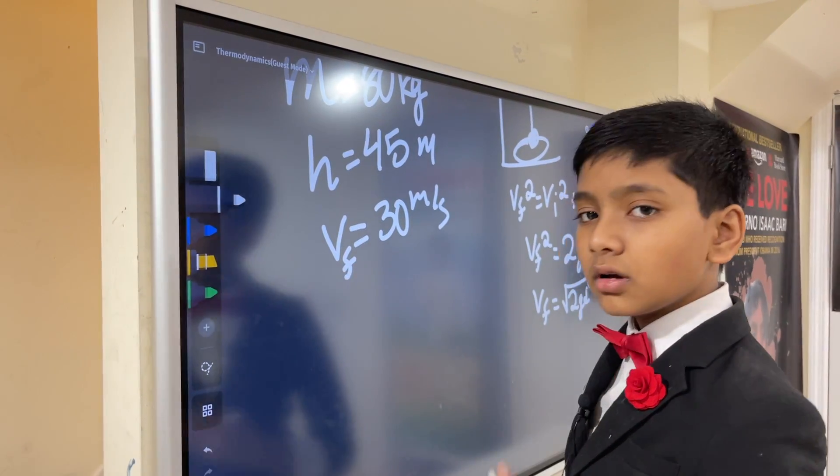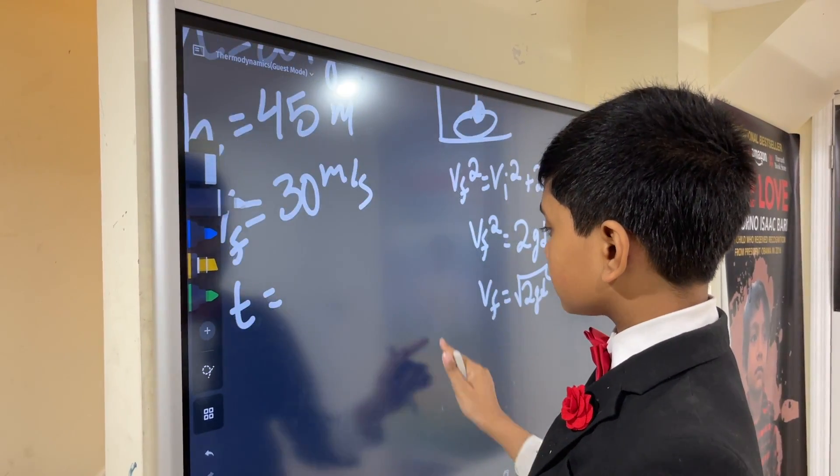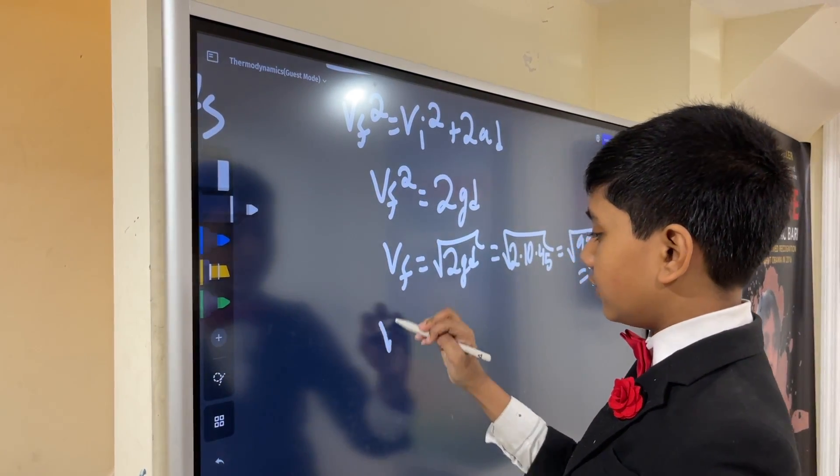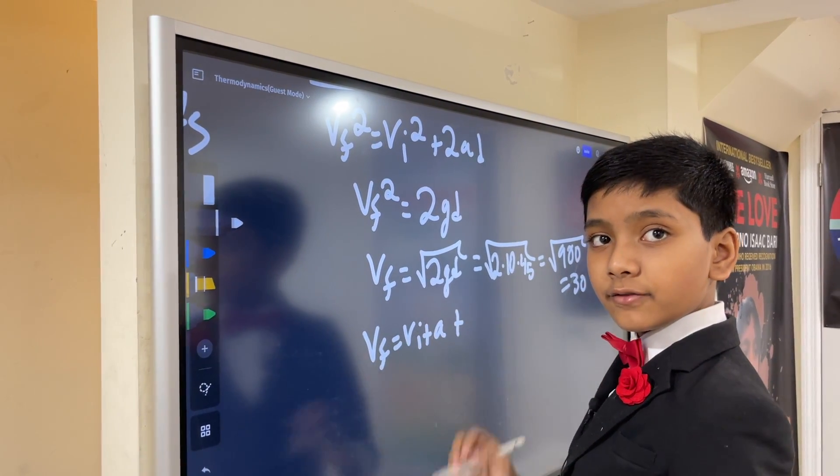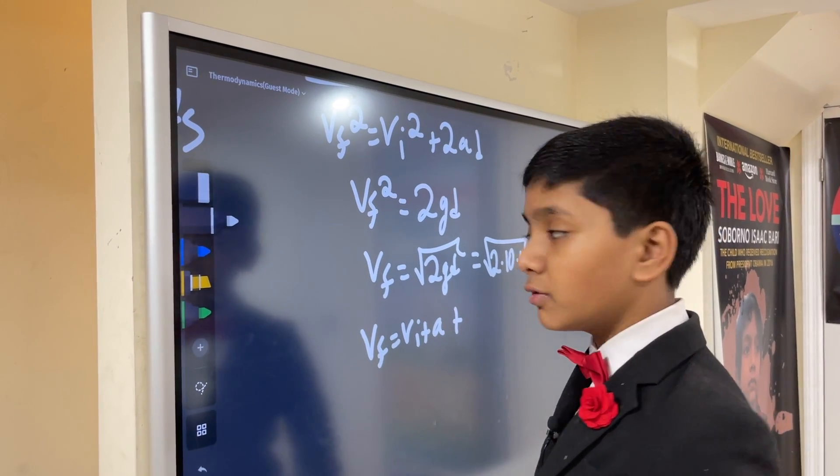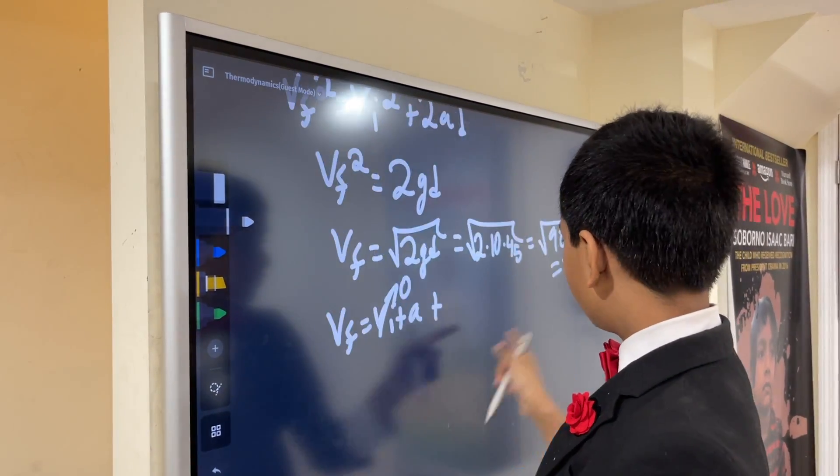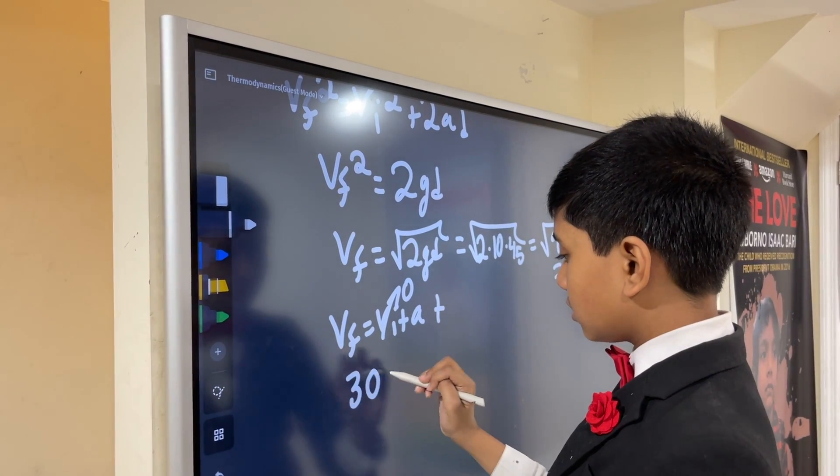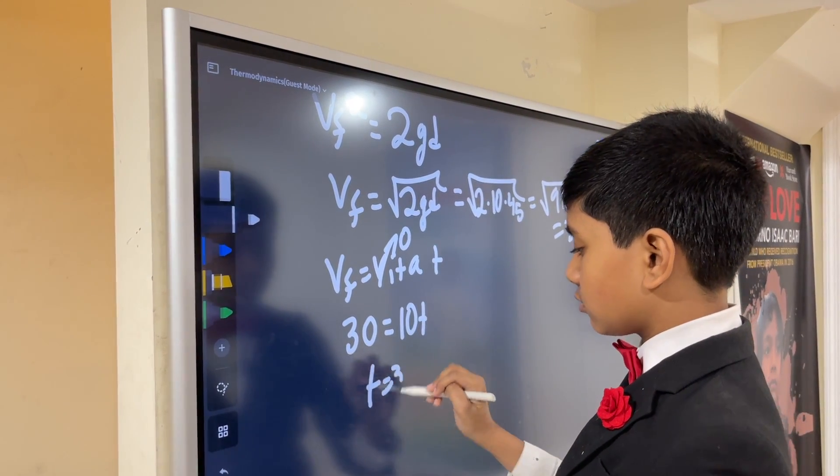So now, what about the time? Well, the funny thing is that vf is equal to vi plus at, so we can find the time here pretty easily as well. So vf is, vi is zero, vf is 30, a is 10, or g, and then we have t, so t is just 3.